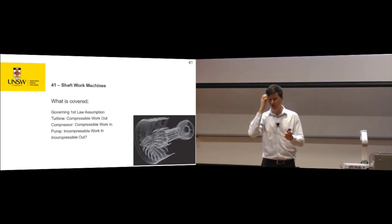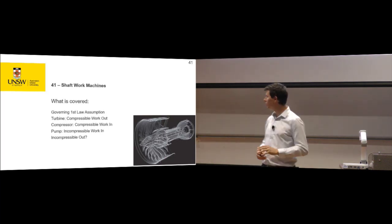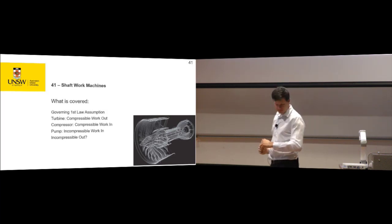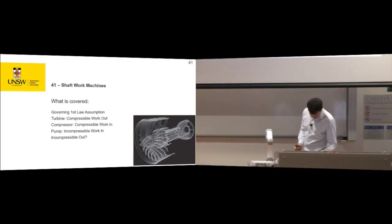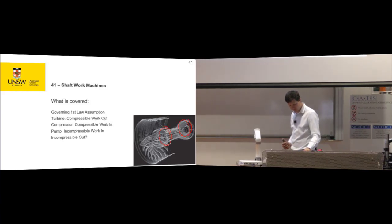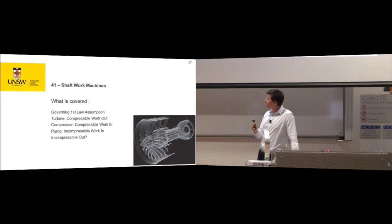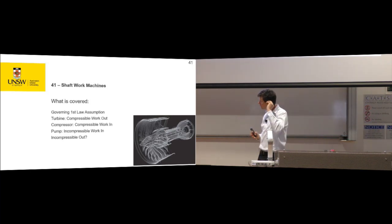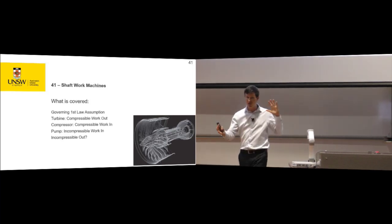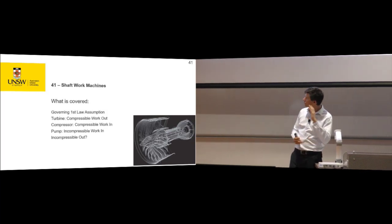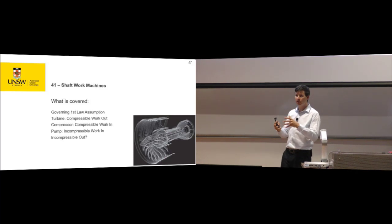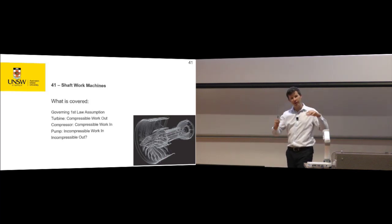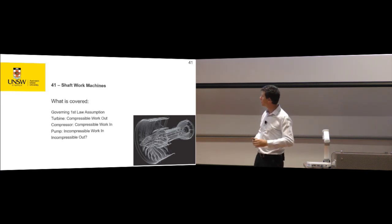Shaft work machines — there are five classes, and shaft work machines are the first. A turbofan jet engine makes extensive use of shaft work machines: specifically a compressor at the front and a turbine at the back. Turbines are used when we have a compressible fluid and want to get work out. A compressor is used when we have a compressible fluid and want to use work to create pressure. A pump is used when we have an incompressible fluid and want to increase pressure.